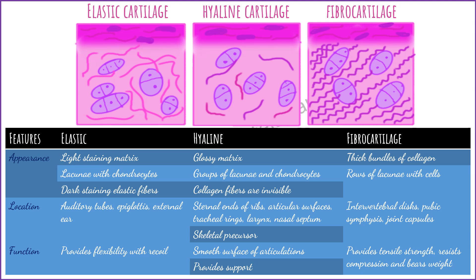Regarding location: elastic cartilage appears in the auditory tubes, epiglottis, and external ear. Hyaline cartilage is present at the sternal ends of ribs, articular surfaces, tracheal rings, larynx, nasal septum, and is also a skeletal precursor. Fibrocartilage is found in the intervertebral discs, pubic symphysis, and joint capsules. Functionally, elastic cartilage provides flexibility with recoil, hyaline provides smooth articulation and support, and fibrocartilage provides tensile strength, resists compression, and bears weight.